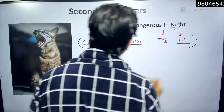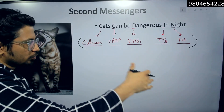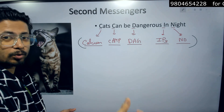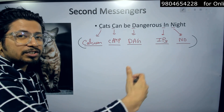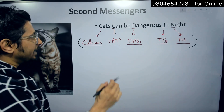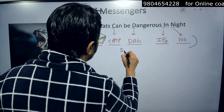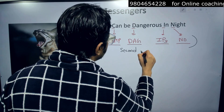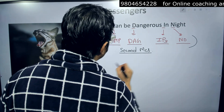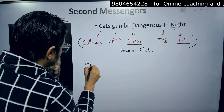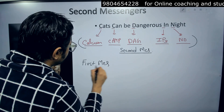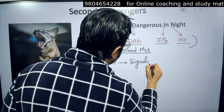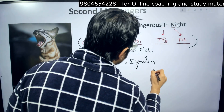These second messengers have different roles to play. We are not going to talk about the roles of these second messengers here, but they play an important role in the process of signal transduction inside the cell. Remember, they are called second messengers because the first messenger is the signaling molecule itself.